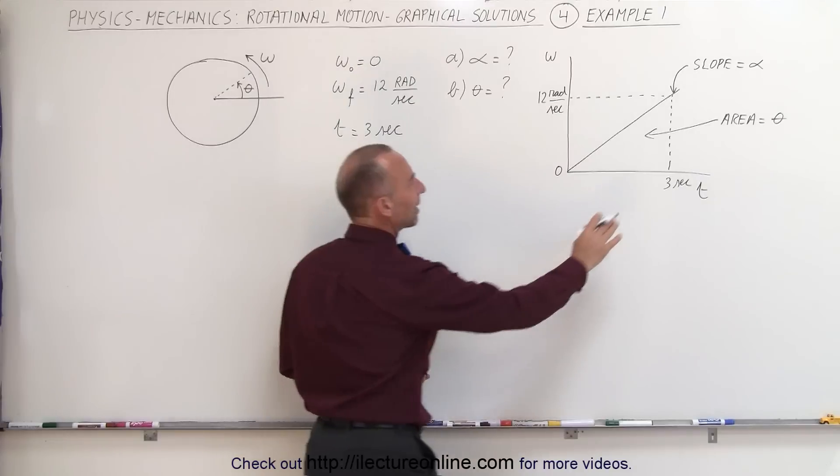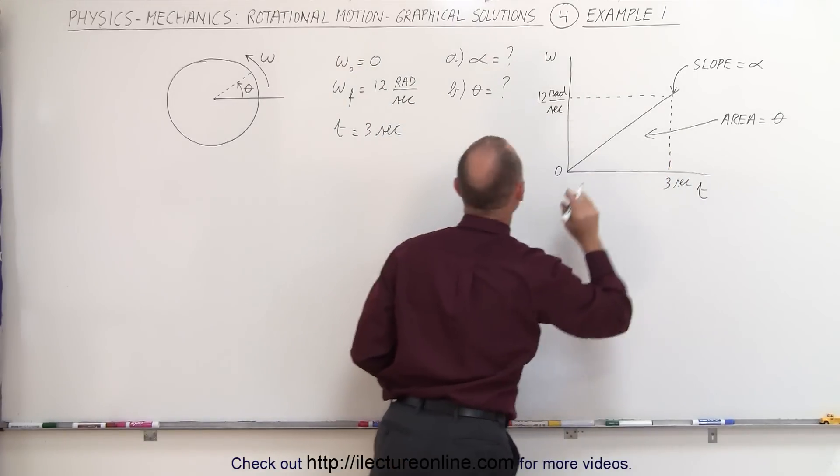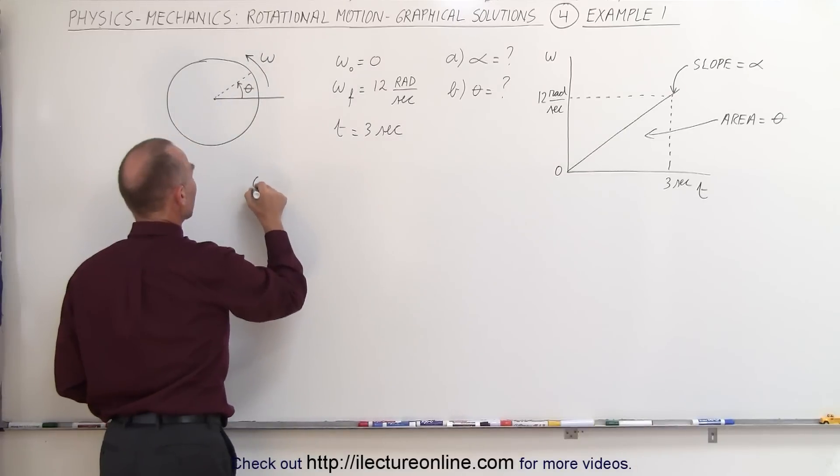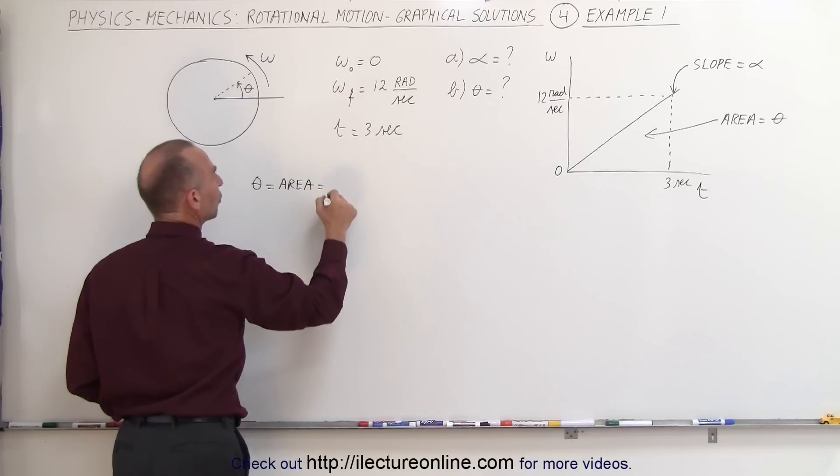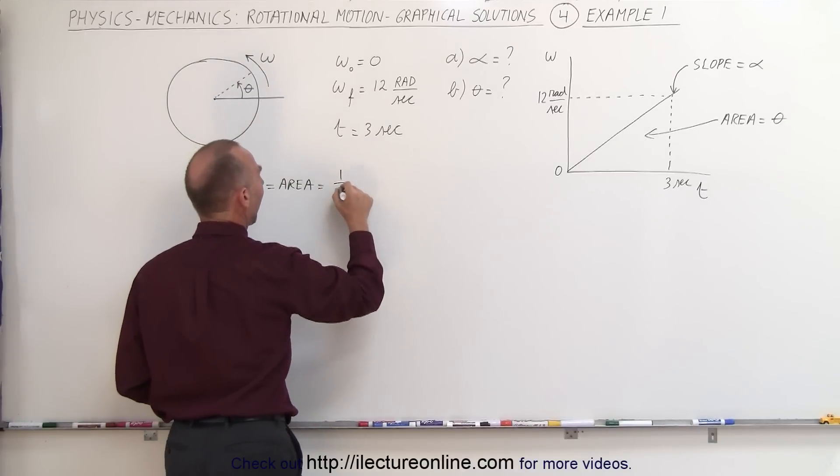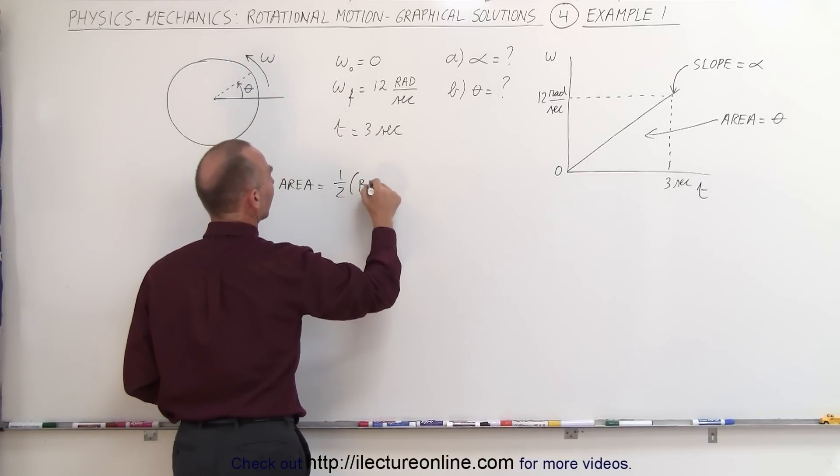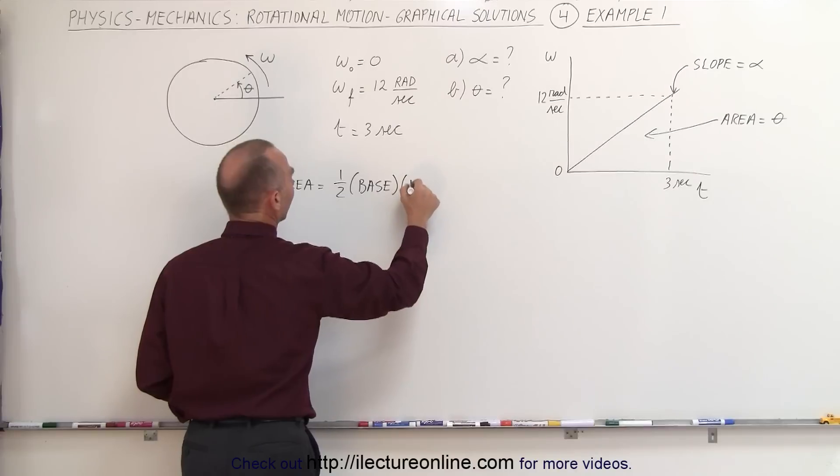So let's first find theta and we know that theta is equal to the area, so we can say that theta is equal to the area underneath the curve which is equal to, since it's a triangle, one-half the base times the height.